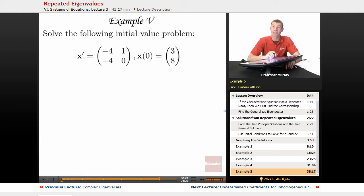So, in Example 5, we're going to solve the initial value problem: x prime equals the matrix negative 4, 1, negative 4, 0, and x of 0 is equal to 3, 8.